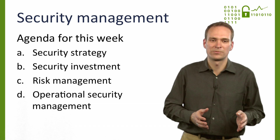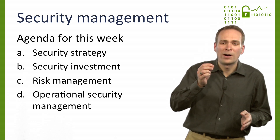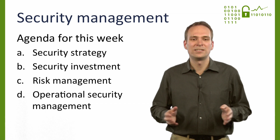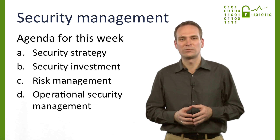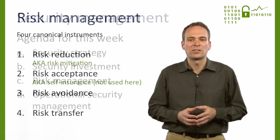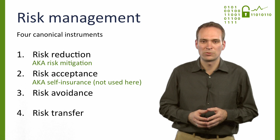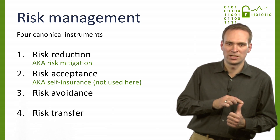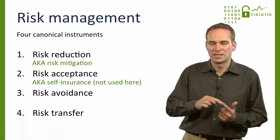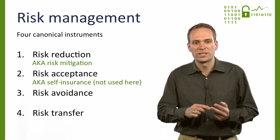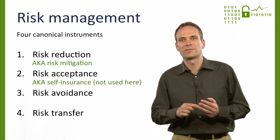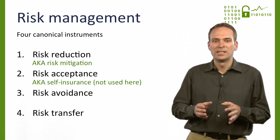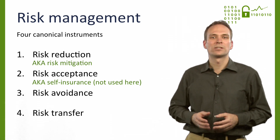Setting money aside for security controls, even if we know how much and exactly what an organization needs, is not the only way of dealing with information security risks. You might recall the four canonical instruments in general risk management: risk reduction or mitigation, risk acceptance, risk avoidance, and risk transfer. Each of them has a specific meaning in risk management, which equally applies to the management of cyber risk.